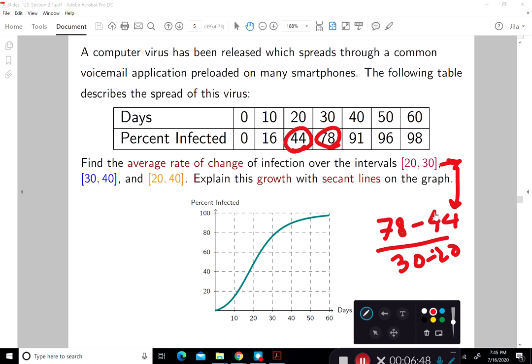How about this one? What is the average rate of change over the interval 30 and 40? So that would be, 30 and 40. At 30, we have 78. At 40, we have 91. So it's 91 minus 78 divided by 40 minus 30. And you compute that one.